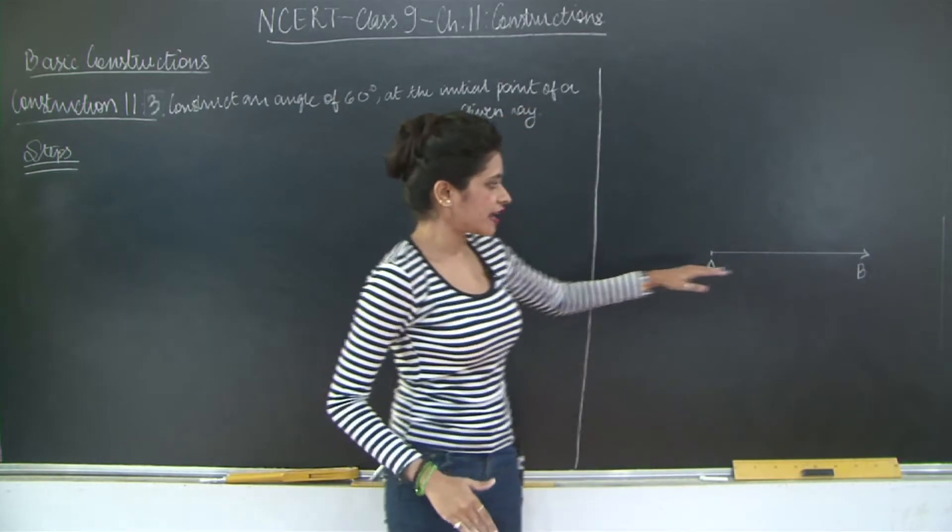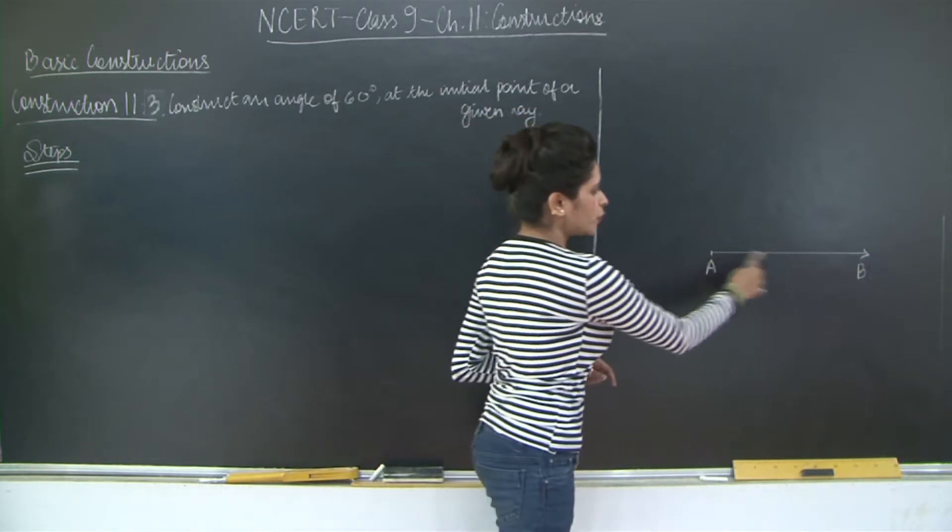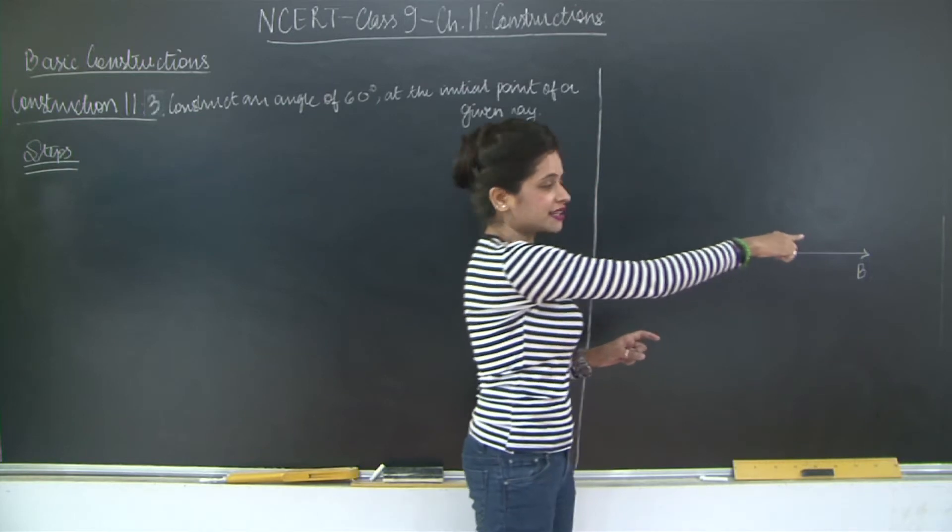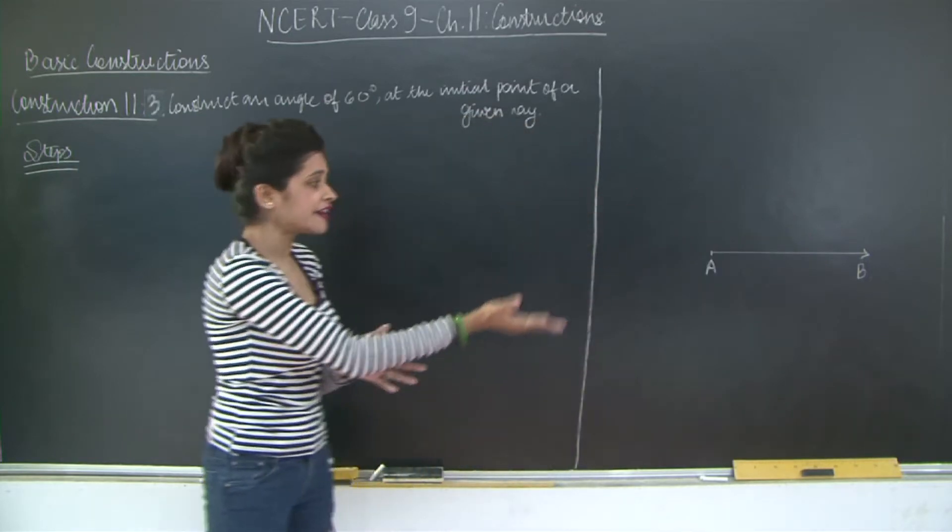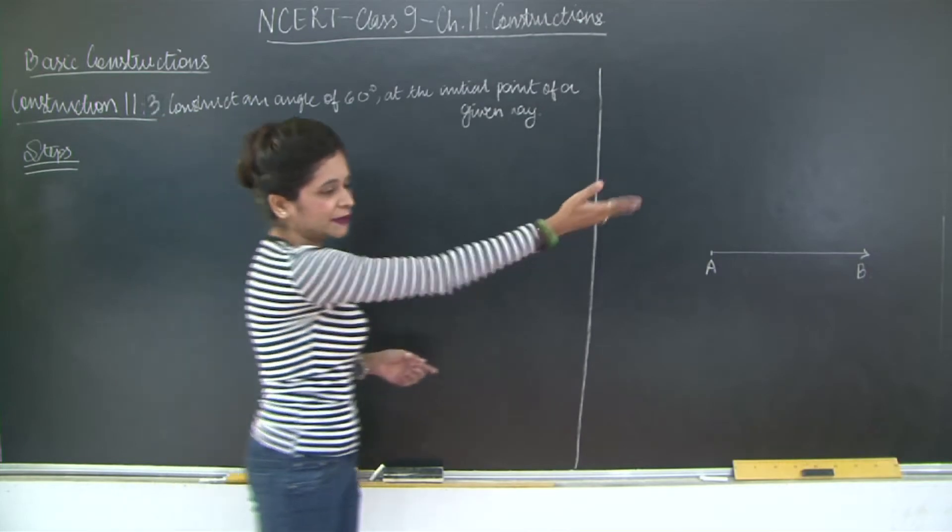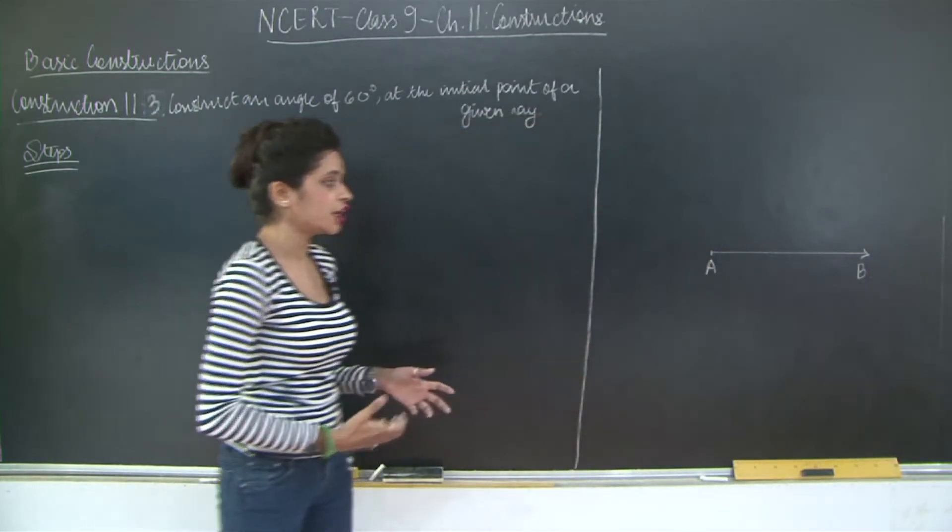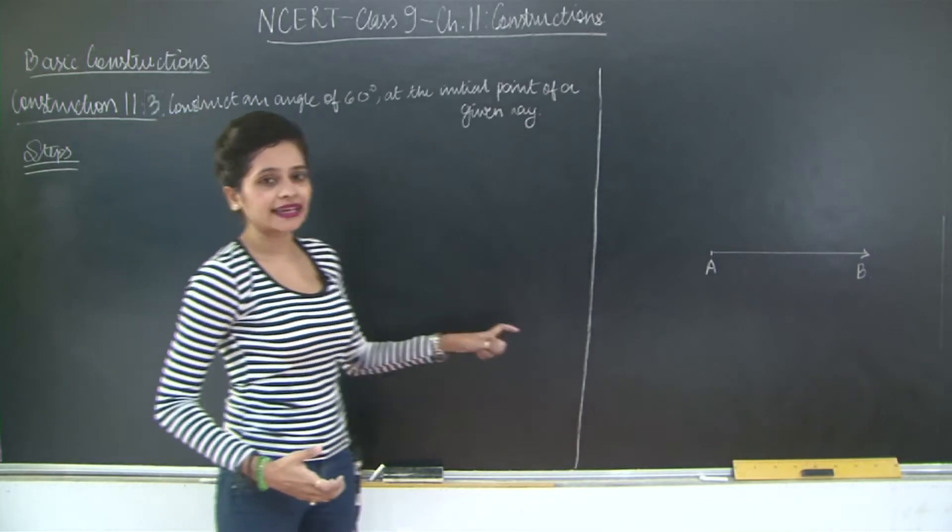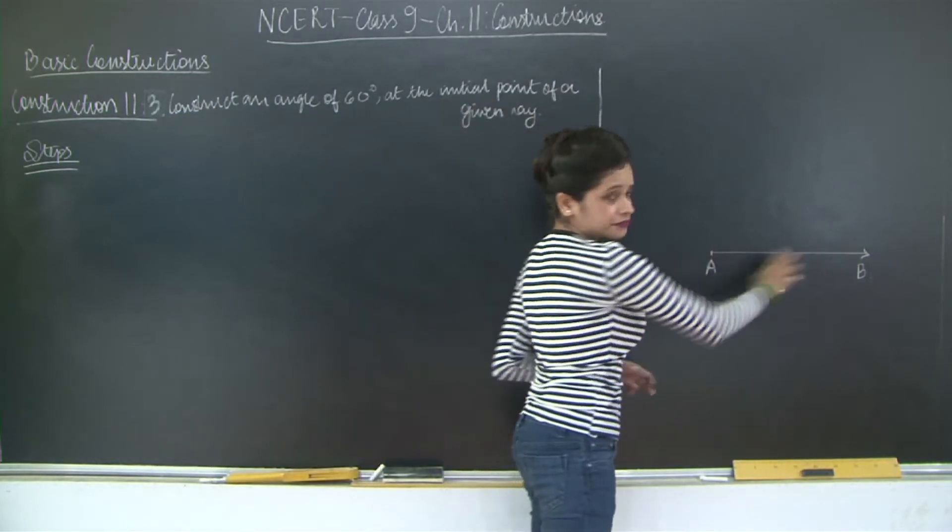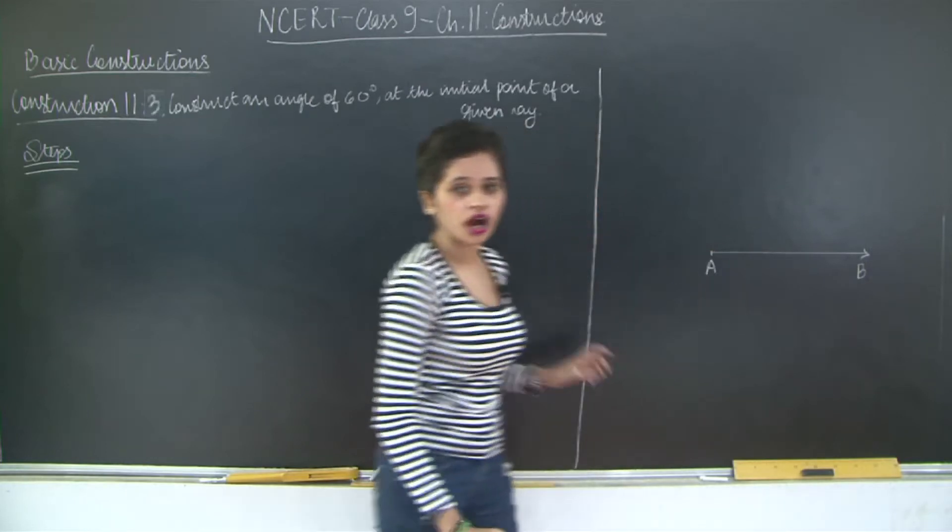So if you have a given ray out here, A is the initial point and B is non-terminating, that is AB can extend indefinitely in the direction of AB. This is the initial point from where your ray is originating. You need to draw an angle of 60 degrees at this point A.